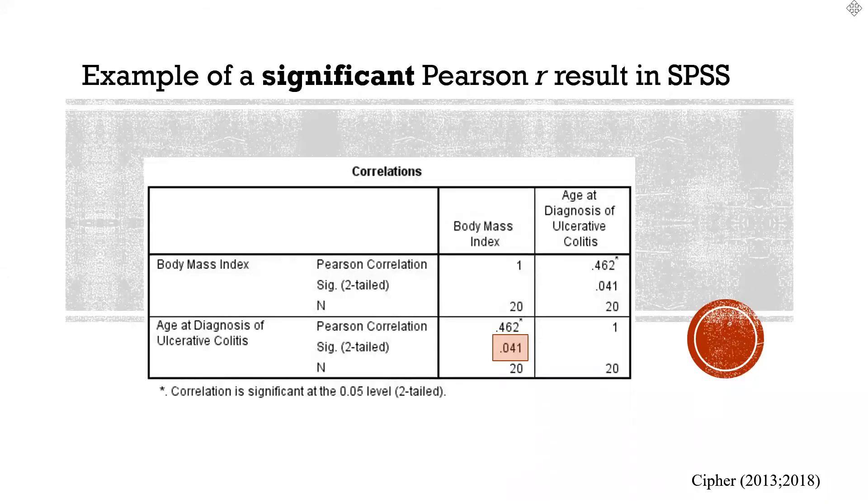Here's an actual example of looking at statistical output to judge whether or not a statistic is significant. Even though I'm using a Pearson R example here, it works the same with any statistical software output. This example is actually taken from exercise 28 in your workbook. We have a Pearson R correlation between BMI and patient age at diagnosis of UC. And you can see that that Pearson R value is 0.462.